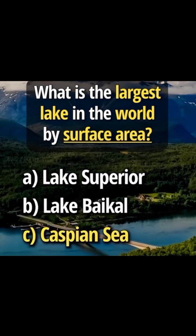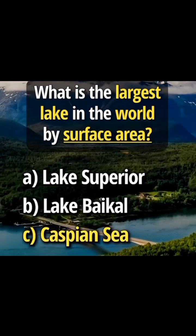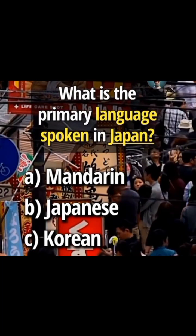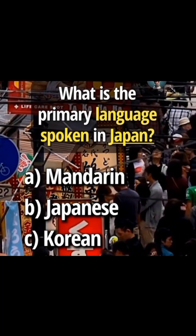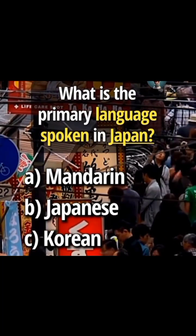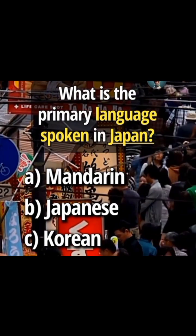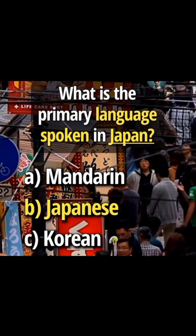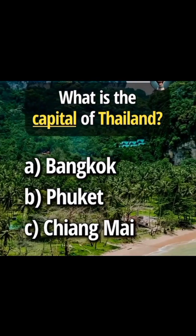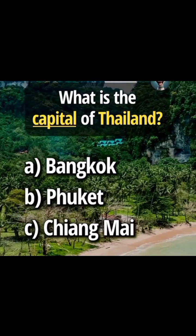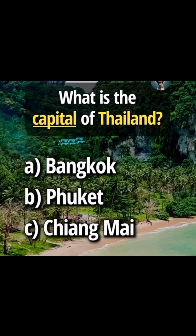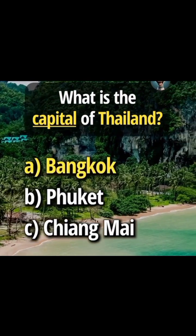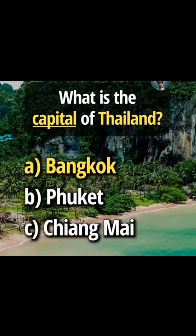Answer C: Caspian Sea. What is the primary language spoken in Japan? Answer B: Japanese. What is the capital of Thailand? Answer A: Bangkok.